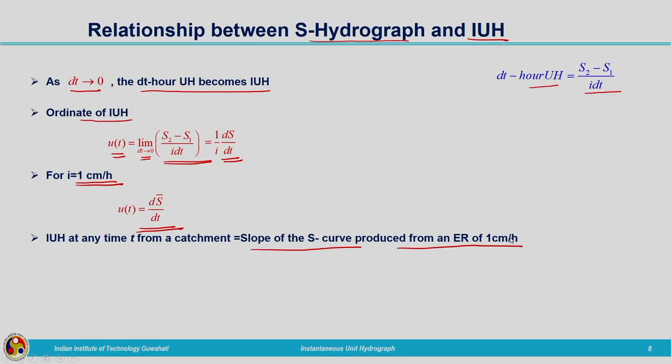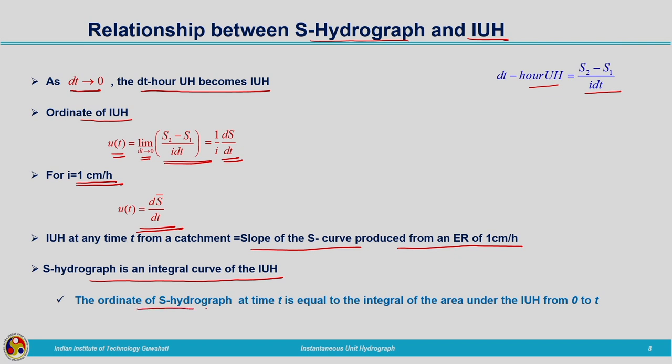So u(t) = dS/dt. The IUH at any time T from the catchment is equal to the slope of the S curve produced from an effective rainfall of 1 cm/hr. The S hydrograph is the integral curve of the IUH — if IUH is obtained by differentiating the S curve, then we can attain the S hydrograph by integrating the IUH. The IUH is obtained by differentiating the S curve with ΔT → 0. The ordinate of the S hydrograph at any time T equals the area under the IUH from 0 to T.